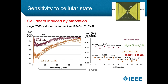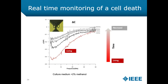Once individual cells are trapped, we can also monitor them in real time. Applying a stimulus — such as methanol added to the culture medium — allows following the death of the cell, shifting from the living spectrum in red and progressing in a few minutes to the gray curve. This gives access to kinetics of biological processes when different stimuli are applied.